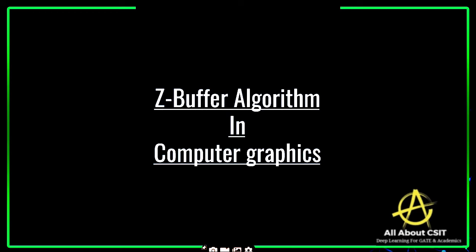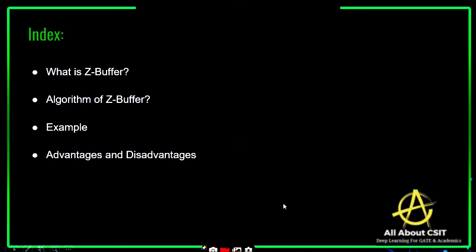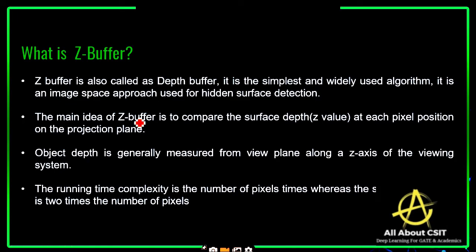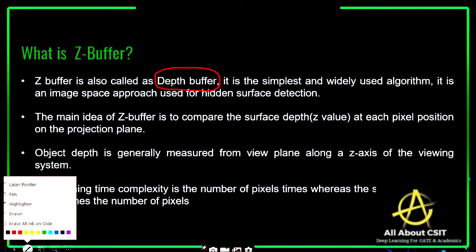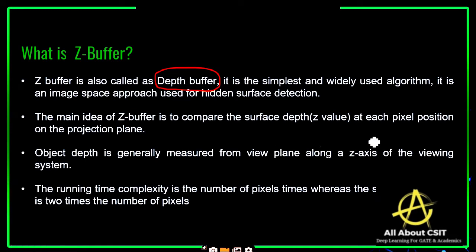The next topic in computer graphics is the Z-Buffer algorithm. In this video, I am going to explain what exactly the Z buffer is, the algorithm, an example, and the advantages and disadvantages of using it. The Z buffer is also called the depth buffer, and it is the simplest and widely used algorithm.